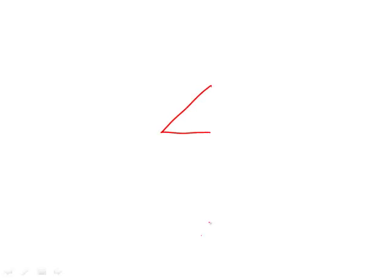I like this problem. This one's a good one. You have this leaning four-sided figure, a leaning quadrilateral or parallelogram standing up. You have 125 degrees over here, and here you have four and you have six. Points A, D, B, and C.